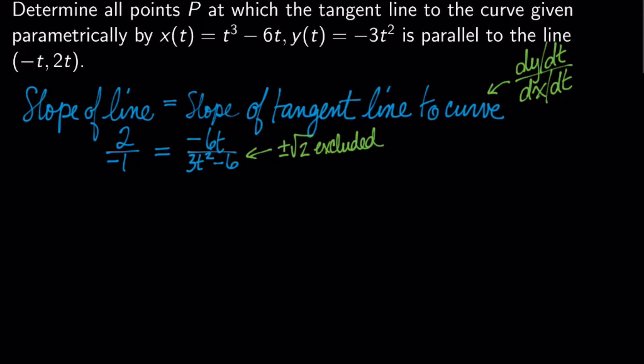I'm going to make sure that plus or minus radical 2 is excluded from my solutions. I don't want them to count as valid because this expression is undefined at those places. I'm always careful to do that before I multiply. I might be adding solutions that are not there when I cross multiply. So, now that I've made that note to myself, I'm going to cross multiply.